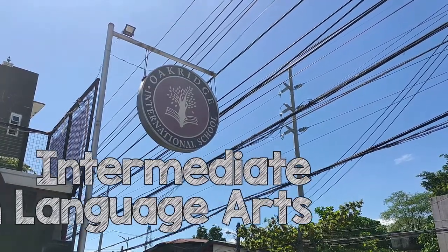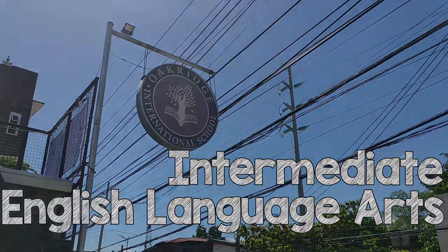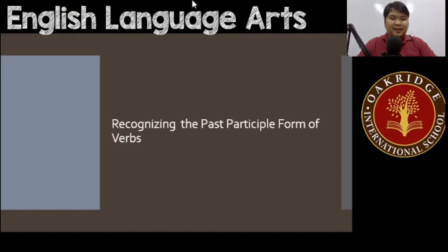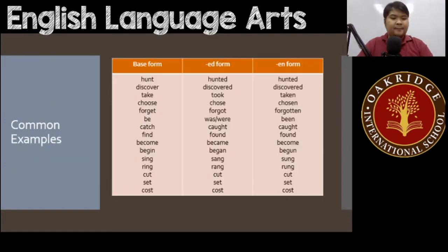Welcome to intermediate level English Language Arts, Grade 6. Our topic for today is recognizing the past participle form of verbs. The past participle form is commonly known as the 'en form' and it is used in perfect tenses. Here are some common examples.